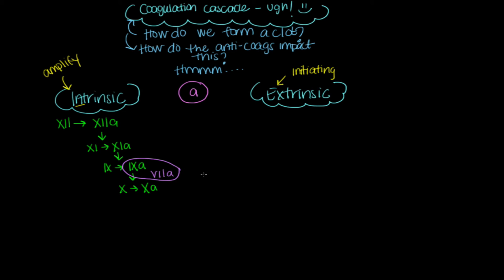Factor 10a turns prothrombin into thrombin, with the help of factor 5a, which came from factor 5. Thrombin will then turn fibrinogen into fibrin, and fibrin is that mesh covering or clot that's going to appear at the site of injury.